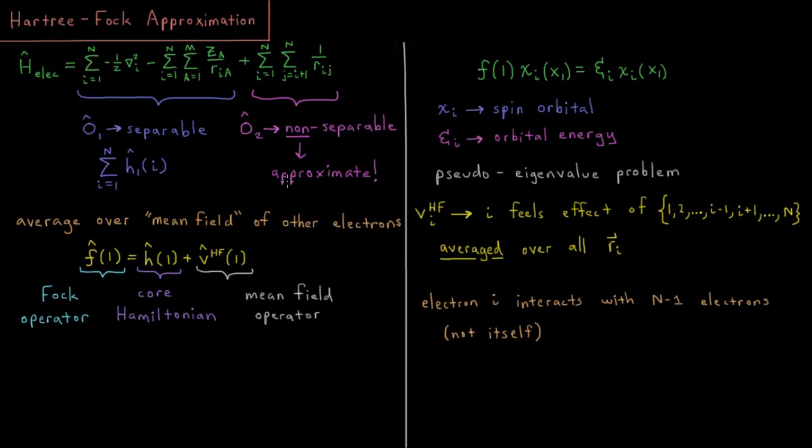So what we're going to do in that case is average over what we call a mean field of other electrons. The Hartree-Fock approximation, you might also call the mean field approximation, because what we're going to do is split our one-electron total energy operator, which we'll call the Fock operator, thus the Fock of Hartree-Fock. We already mentioned Hartree products earlier in the chapter. So the Fock operator is coming in here, where the Fock operator is a sum of the core Hamiltonian for an electron, namely its kinetic energy and attraction to all of the nuclei,